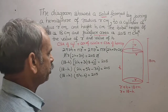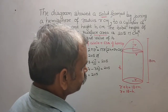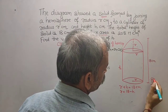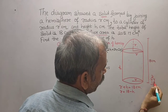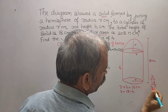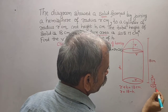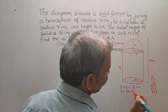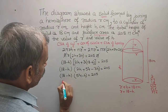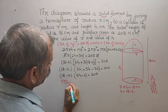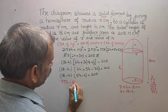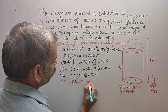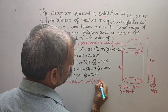Expanding (18 − h)(54 − h): 18 × 54 = 972. So we get 972 − 18h − 54h + h² = 205.